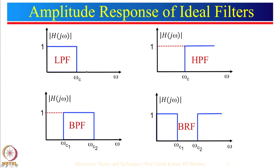We had started with the ideal filter response. Here is the response of an ideal low pass filter which passes all the frequencies up to omega c and blocks all other frequencies. A high pass filter passes all the upper frequencies beyond omega c. A band pass filter passes all frequencies between omega c1 and omega c2, and a band reject or band stop filter blocks all frequencies between omega c1 and omega c2.